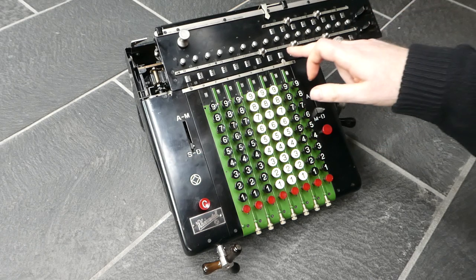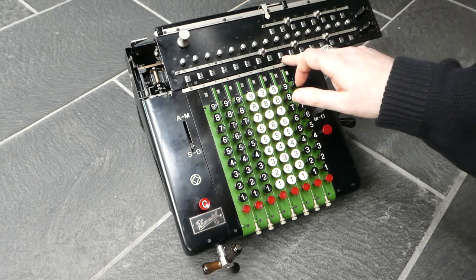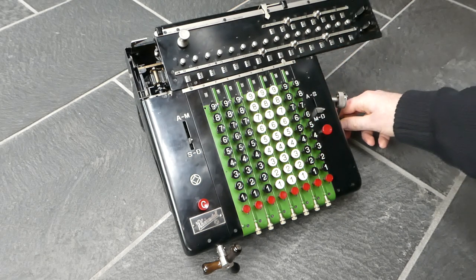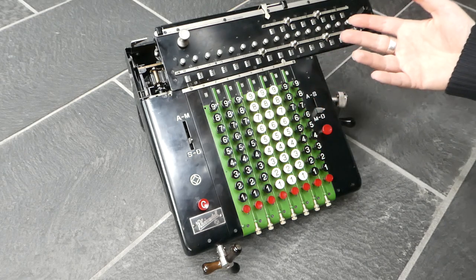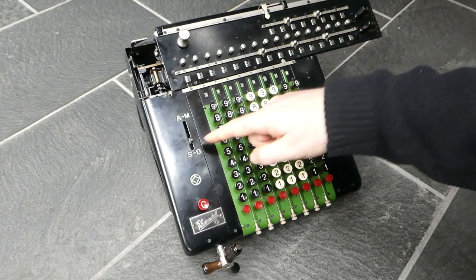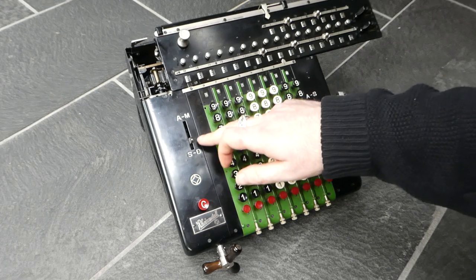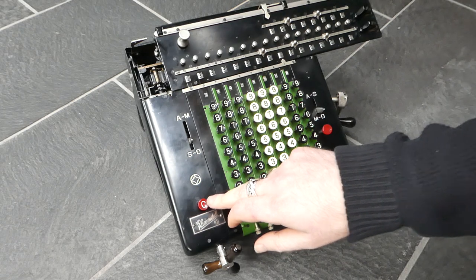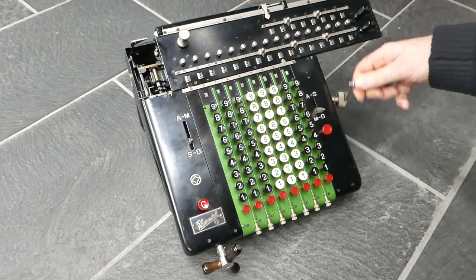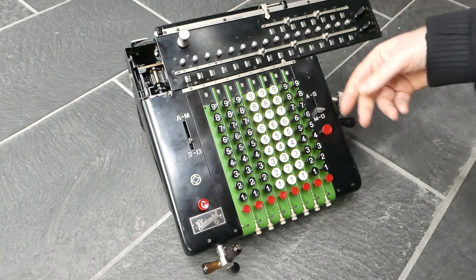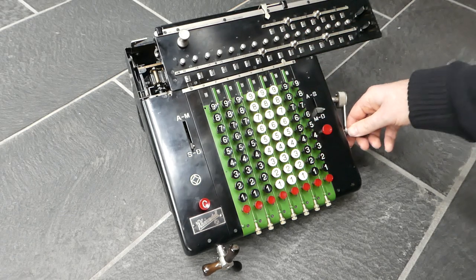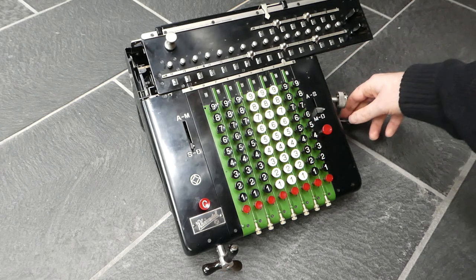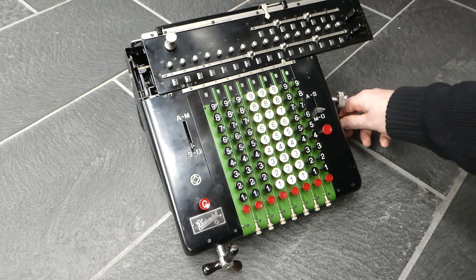On the first turn it subtracts, or tries to subtract, and it underflows. And I'll keep turning. It doesn't seem to do anything, but it's now put in a different state where it is going to correct this previous subtraction. You can see that this C button has been pushed down. So it's corrected it now by adding it again. And on the next turn it'll automatically shift the carriage to the left.